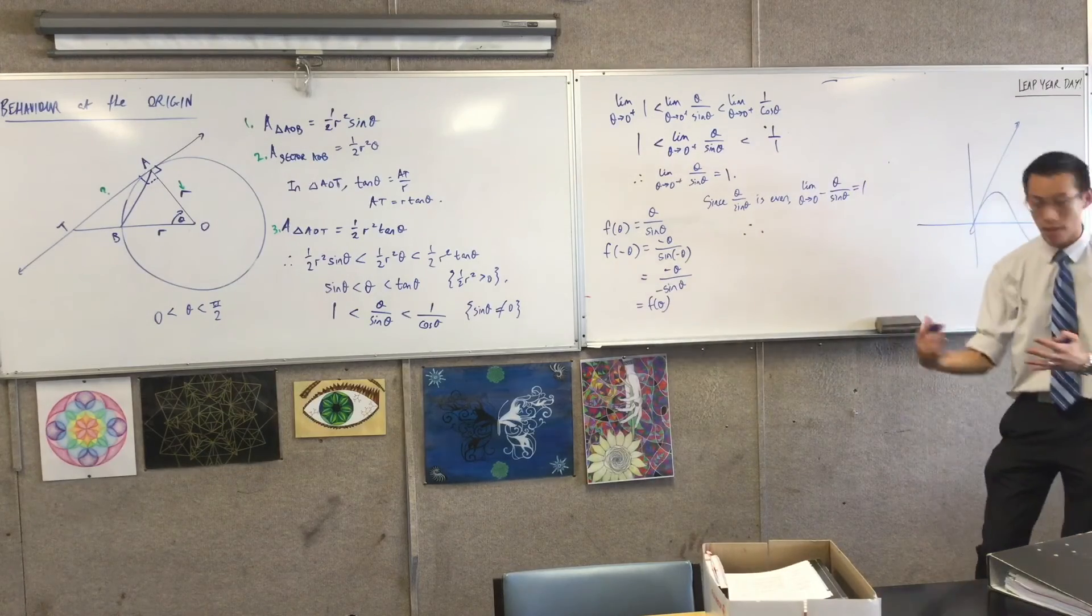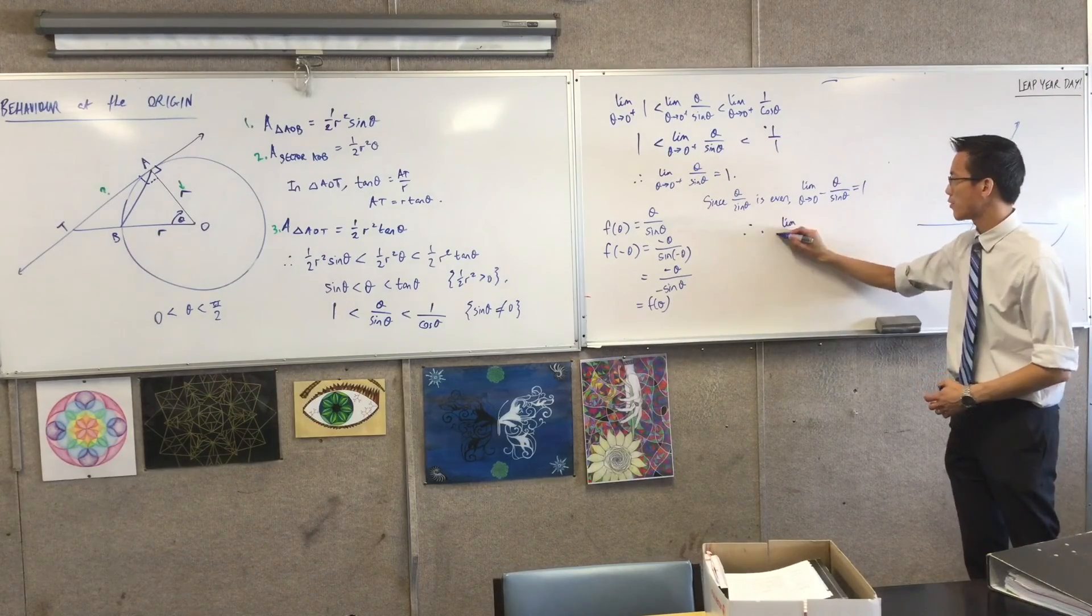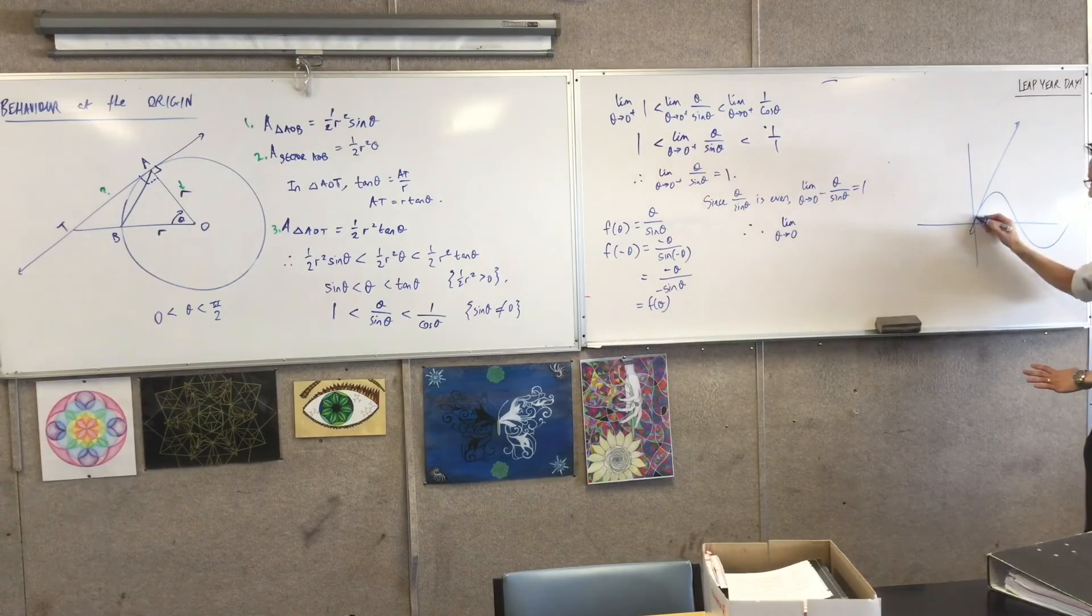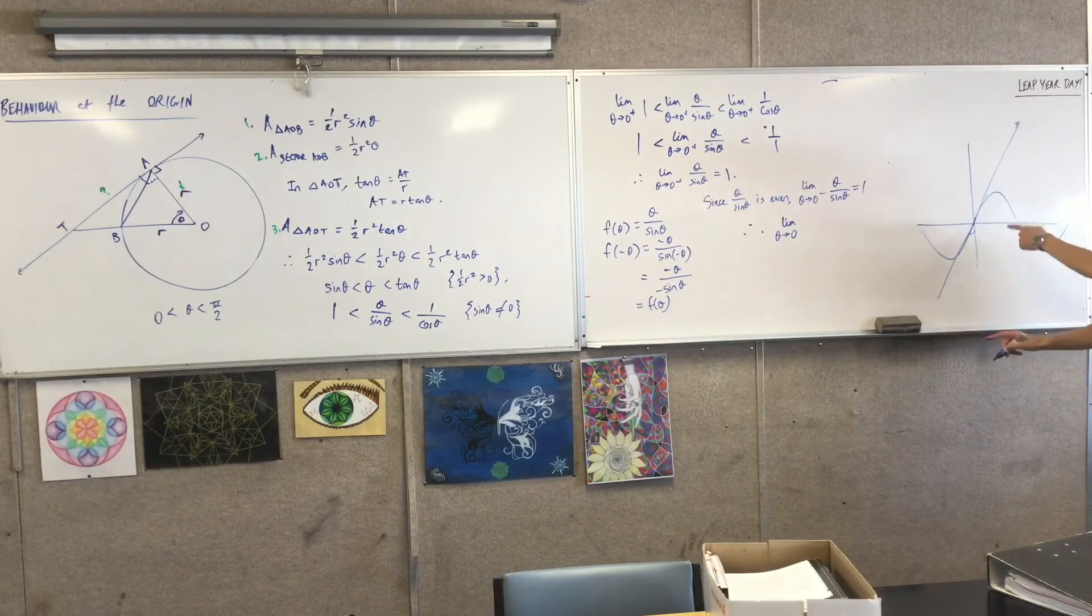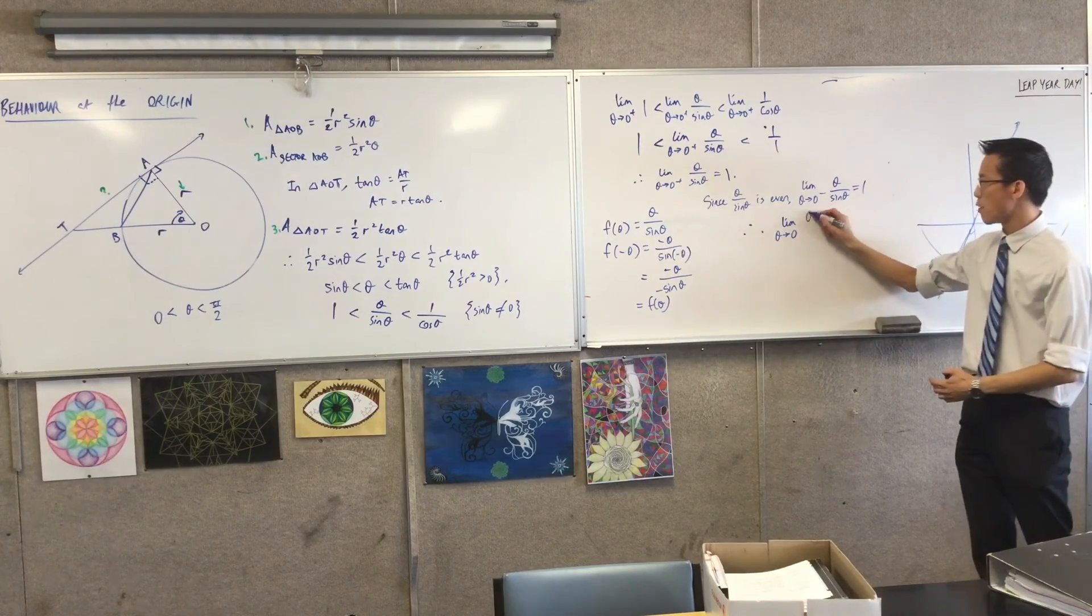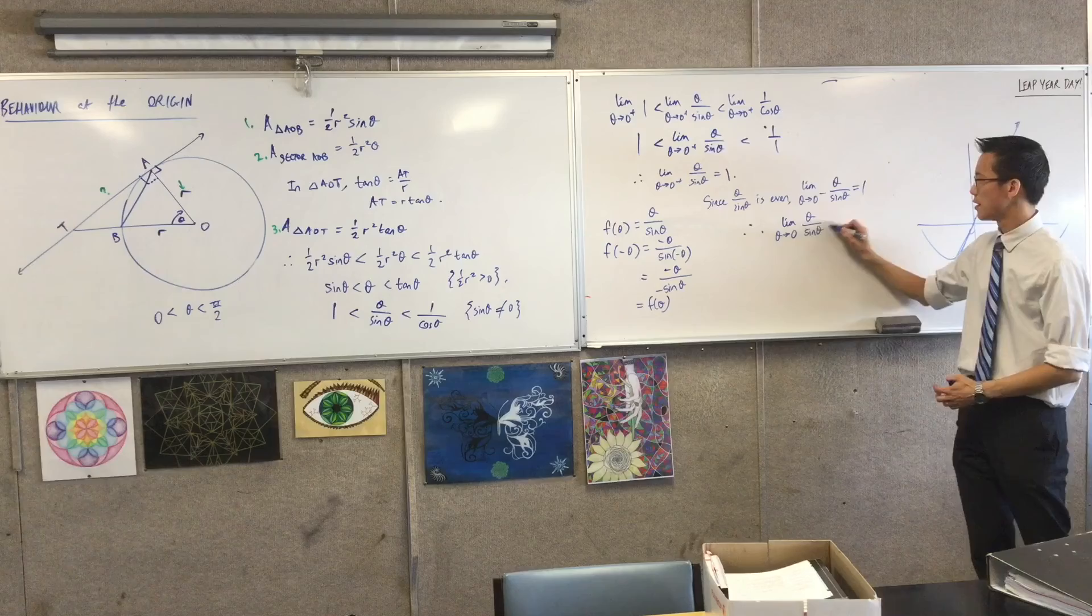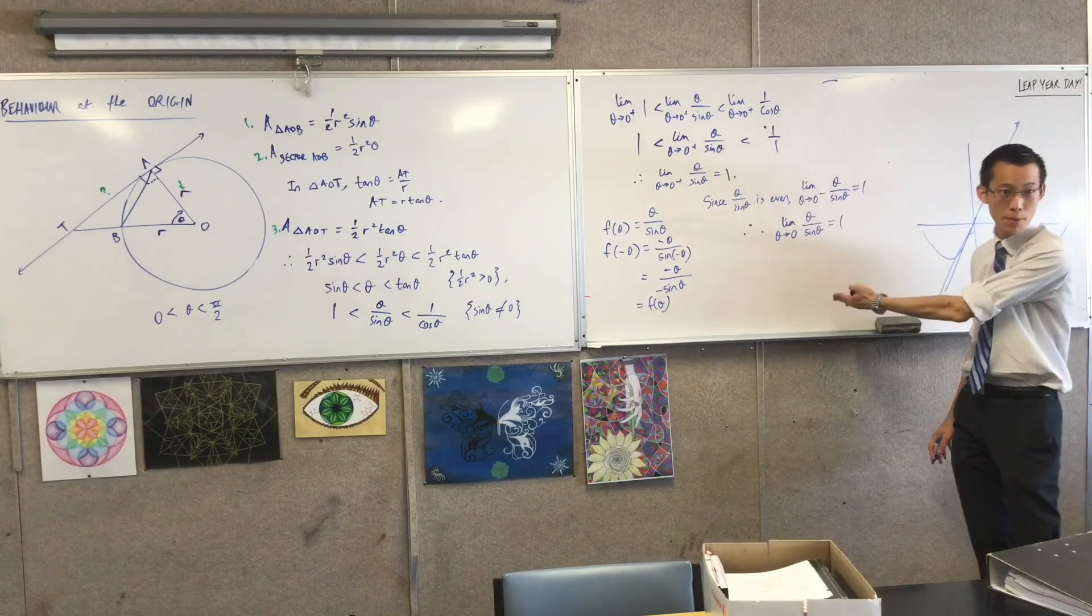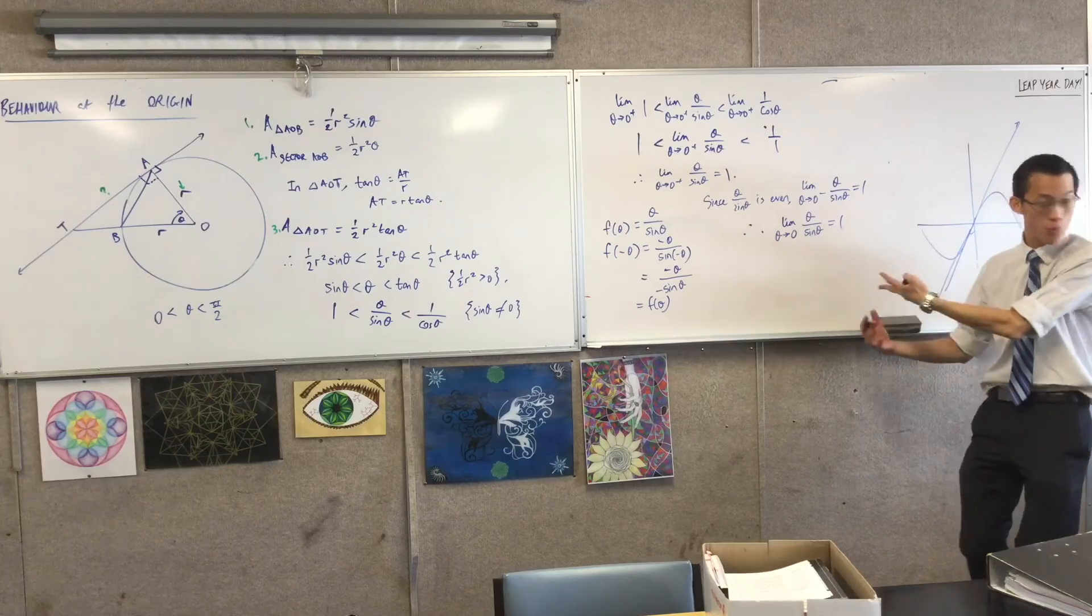And now I'm finished. Now I can put them two together and say, you know what, if theta is approaching zero, it doesn't matter where you're coming from. This makes sense because look at what these two graphs look like. No matter which direction you're coming from, this is going to be one.